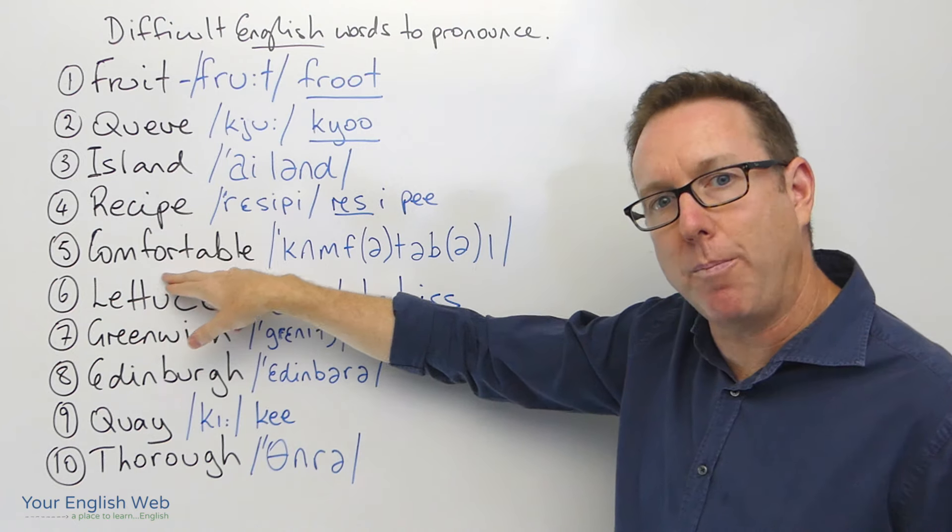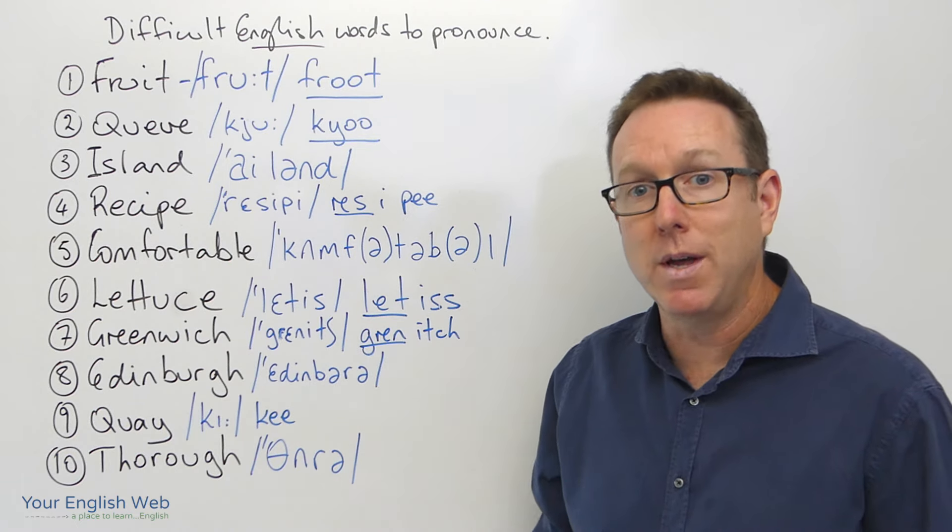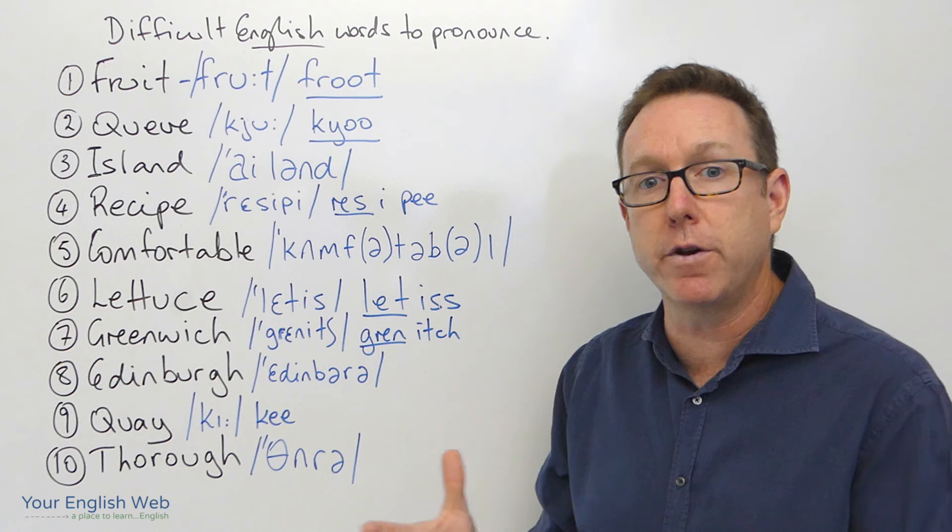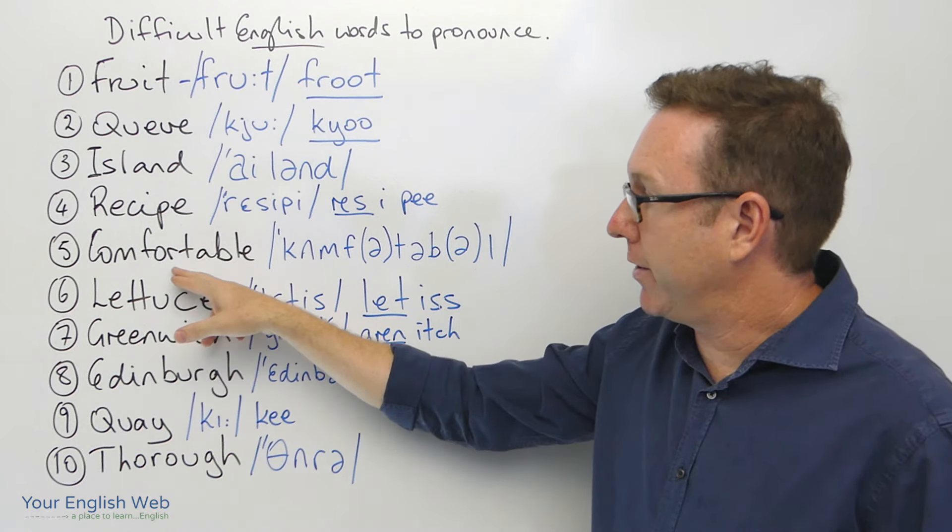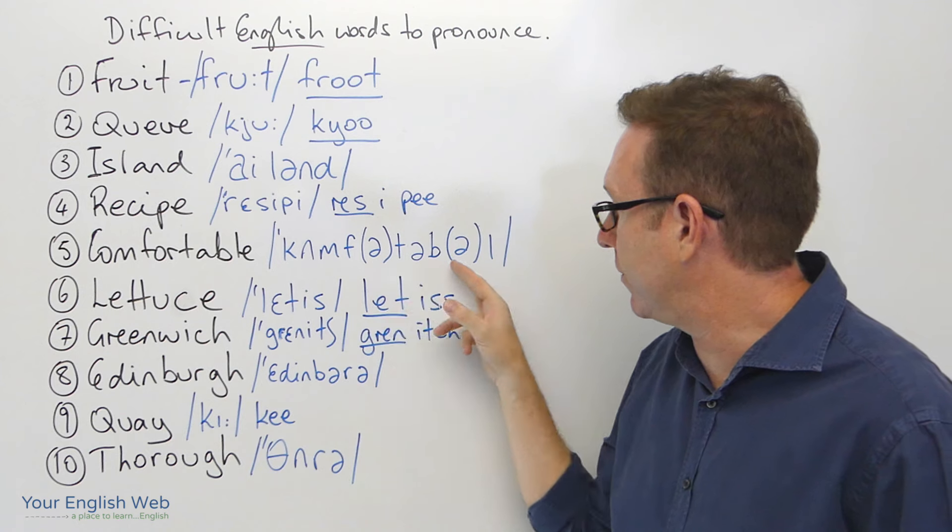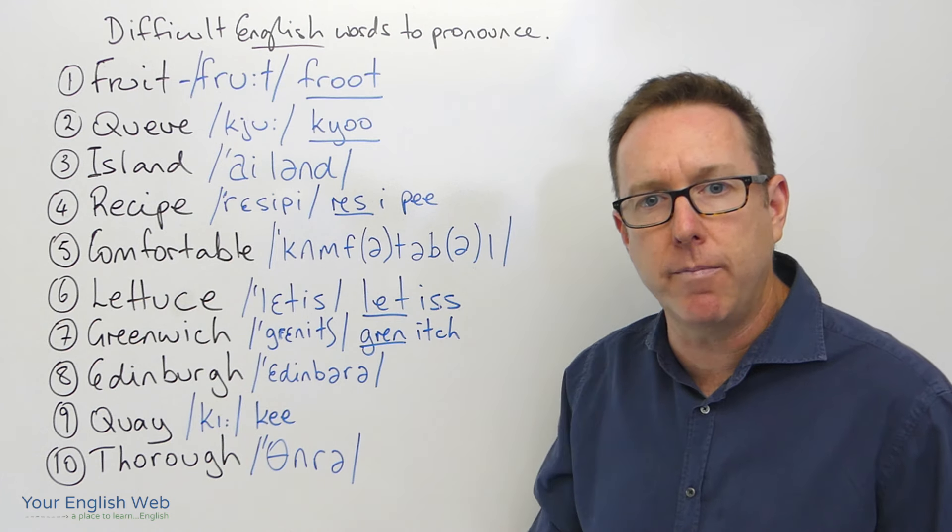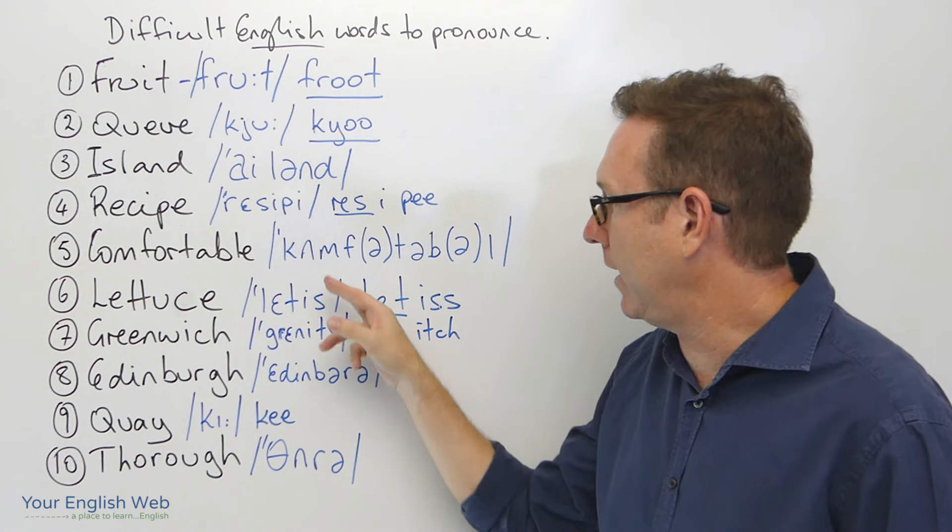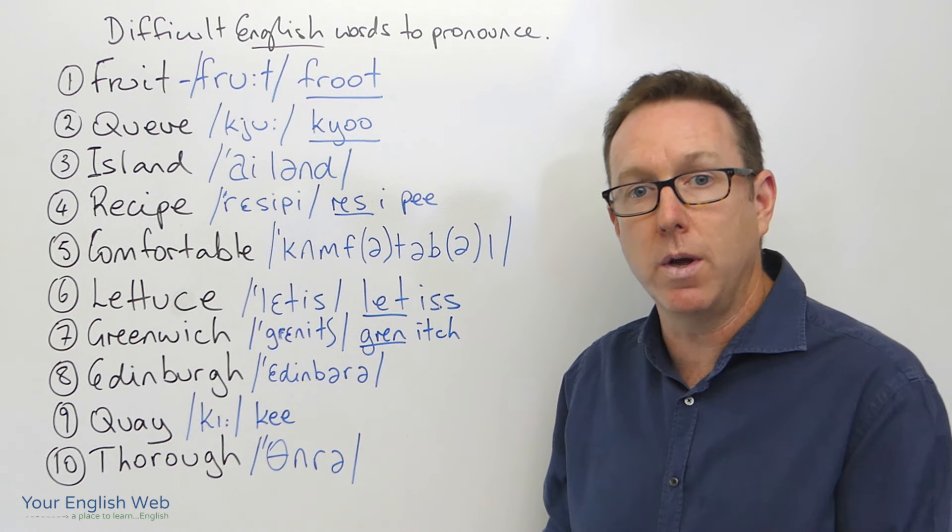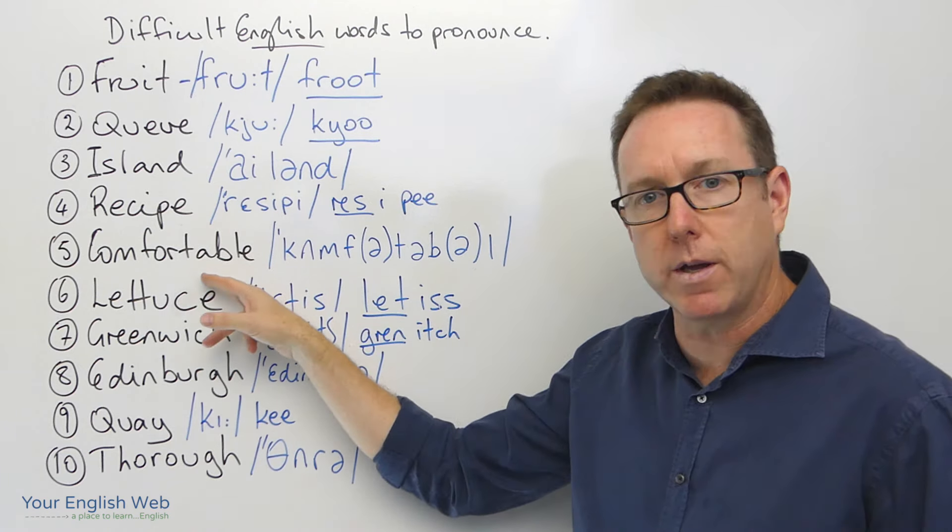This word here is a little bit more complicated because there's two or three different ways to pronounce this word. I, for example, pronounce this word comfortable, comfortable. You can also pronounce this word in English comfortable, comfortable. We can see here that we have a couple of sounds in brackets because they're very weak sounds. Listen again: comfortable, comfortable, comfortable. Or as I said before, you can also pronounce it comfortable, comfortable. Two different ways that we can pronounce that word.